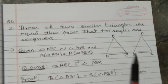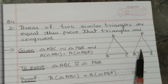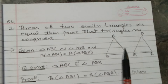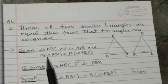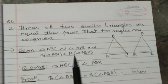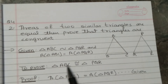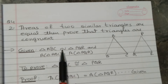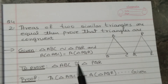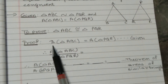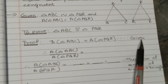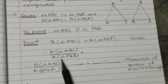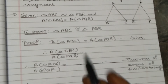We have drawn two figures ABC and PQR. Given: triangle ABC is similar to triangle PQR, and area of triangle ABC equals area of triangle PQR. We have to prove triangle ABC is congruent to triangle PQR. Since their areas are equal, area of triangle ABC upon area of triangle PQR = 1.